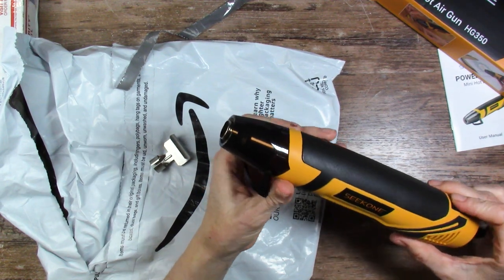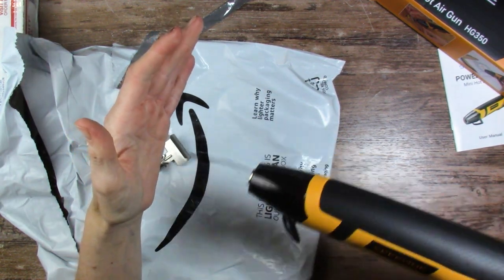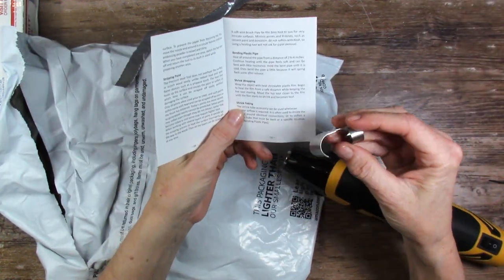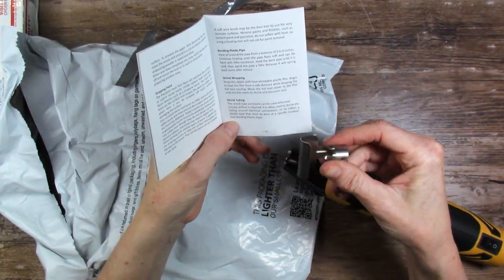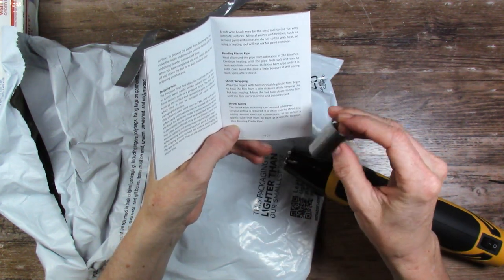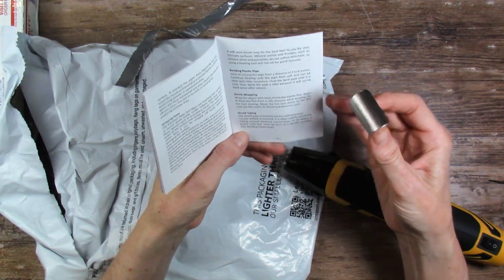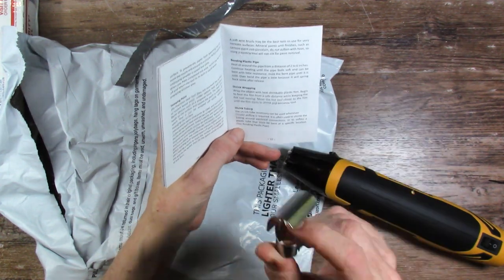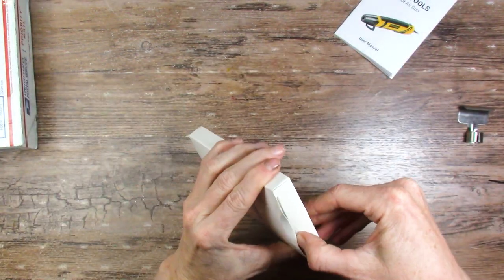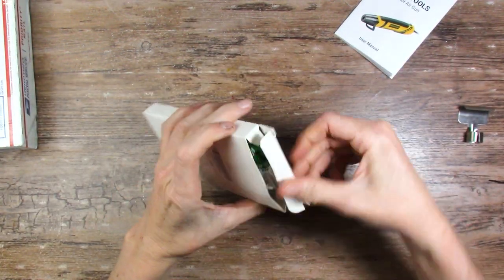All right are you ready for this? Very nice. What's this? It's a shrink tube accessory and it says the shrink tube accessory can be used whenever circular airflow is required. It is often used to shrink the tubing around electrical connections or to soften a plastic tube that must be bent at a specific location. Oh there's one more thing in there. Taped really well.